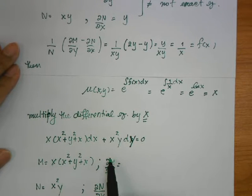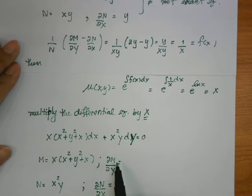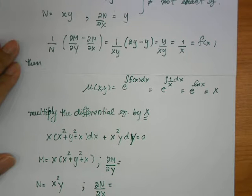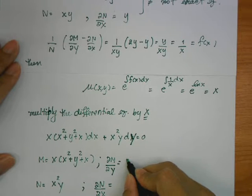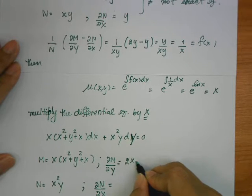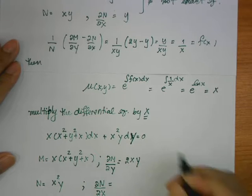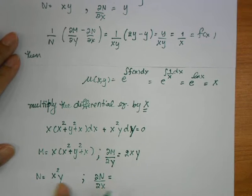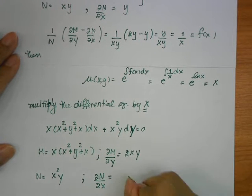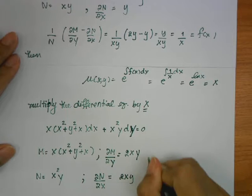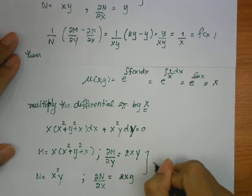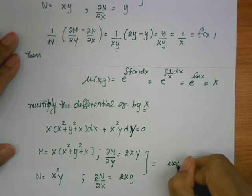The derivative of M with respect to y is equal to 2x plus... and the derivative of N with respect to x is equal to 2xy. Now they are equal, so that means you get an exact equation.